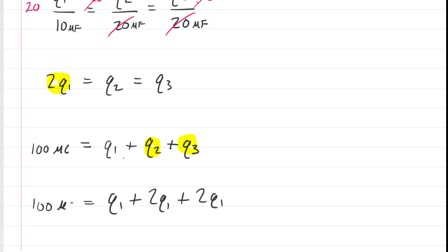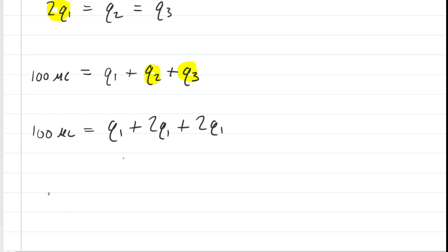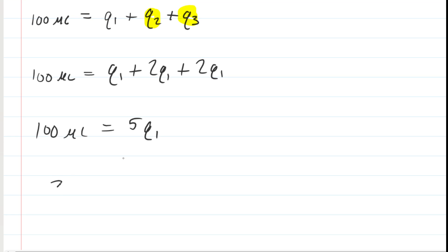We are on the verge of solving for Q1. We can add the terms on the right-hand side. That's going to give us 5Q1, and then divide both sides by 5. And you end up getting 20 microcoulombs is the charge on capacitor 1 after the switch was thrown to the right.